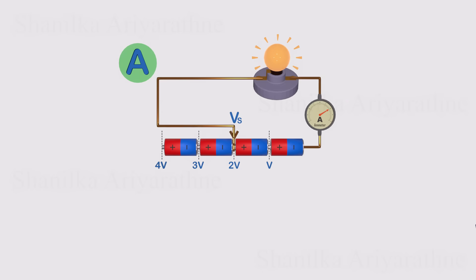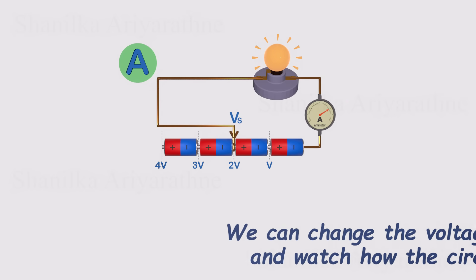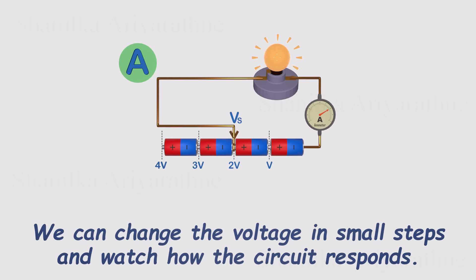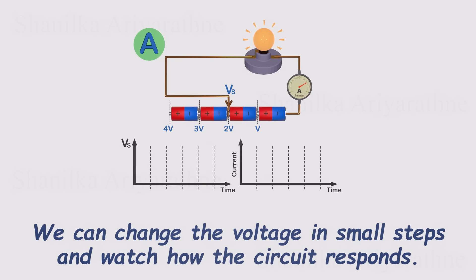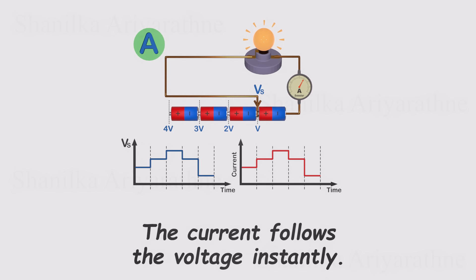Imagine a simple circuit with a light bulb. We start changing the voltage in small steps and watch what happens. If we plot voltage and current over time, the current tracks the voltage instantly, step for step, exactly as Ohm's law predicts. The bulb's brightness rises and falls right along with the voltage. Nothing unusual, nothing dramatic. In fact, it's almost boring.